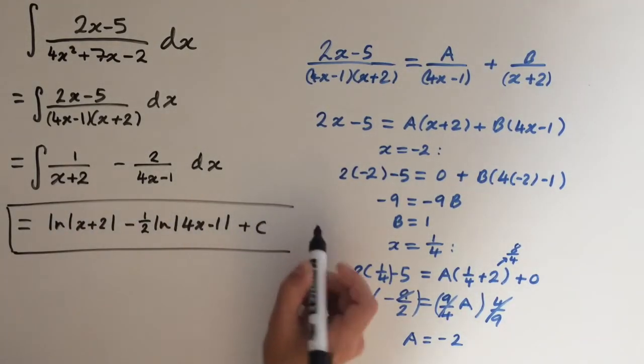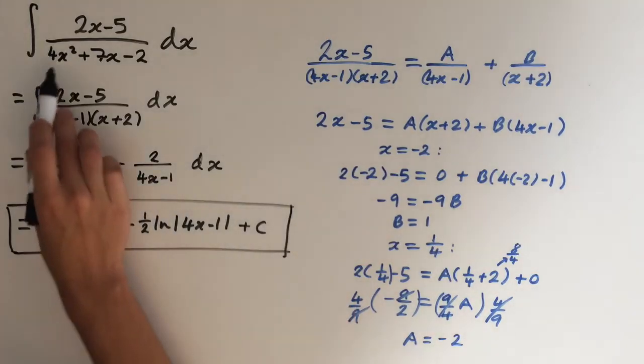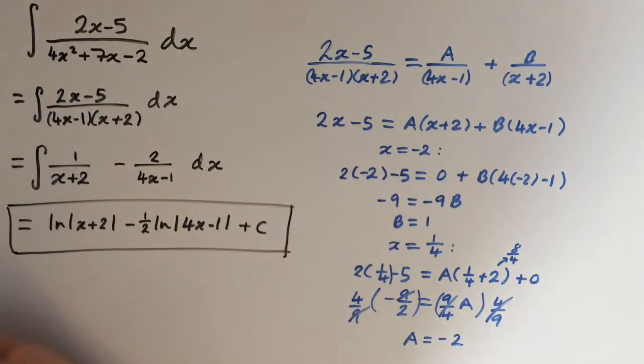So there you go. Integral of 2x minus 5 all over 4x squared plus 7x minus 2.